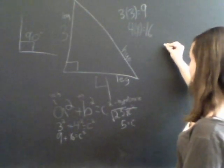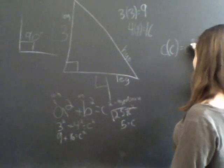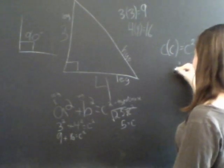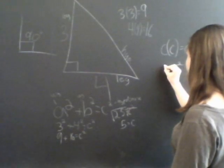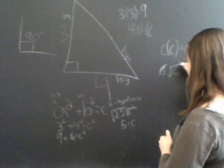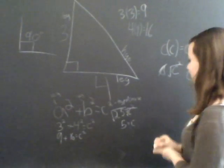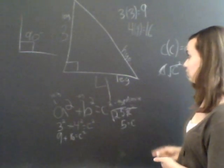Because C times C equals C squared. The square root of C squared is C. So that's how you would solve for the length of the hypotenuse. It's five.